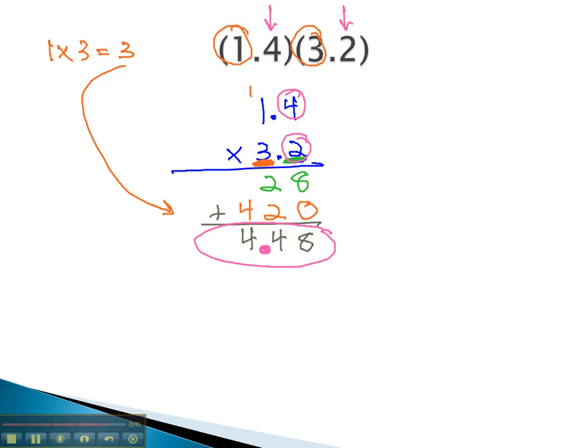When multiplying with decimals, what we want to do is make sure we multiply like whole numbers, then place the decimal by counting how many decimal digits are in the original problem.